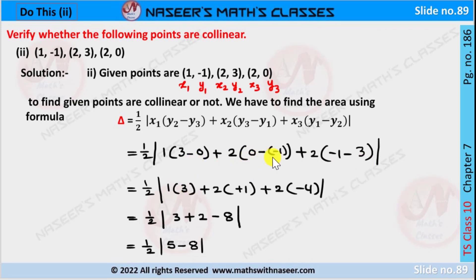And -1 minus 3 is -4. 1 into 3 is written as 3, 2 into 1 is written as 2, and 2 into -4 is written as -8.